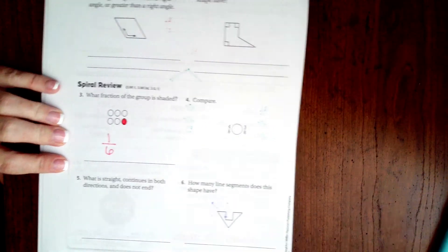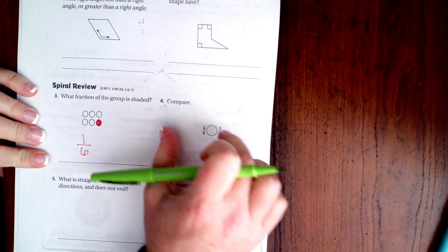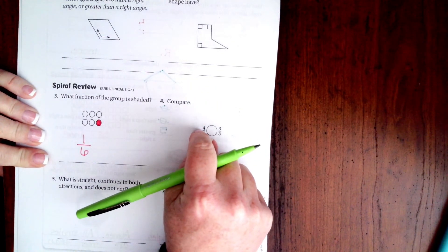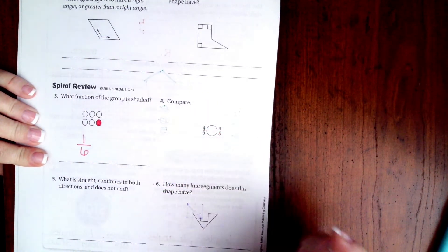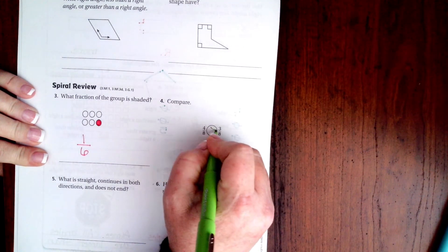All right, this one, the denominators are the same, so I have the same amount of pieces. But on this side someone ate four, and on this side someone ate three. Four is bigger.